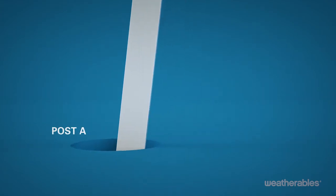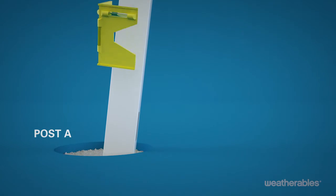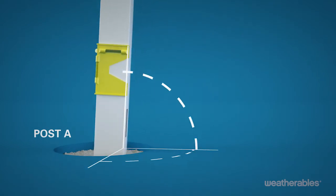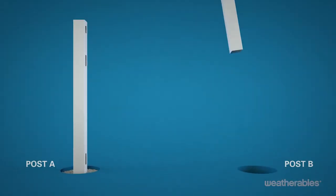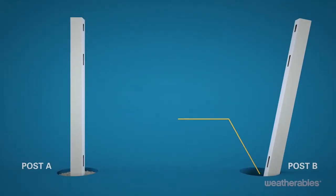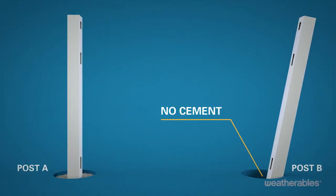Now you can start by installing post A in the first hole with concrete around the post. Be sure to level and plumb the post for proper placement. It's important to have post B sitting in the adjacent hole but not cemented so you can assess alignment.